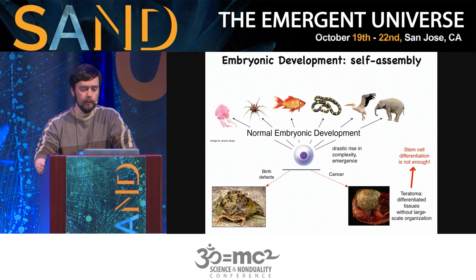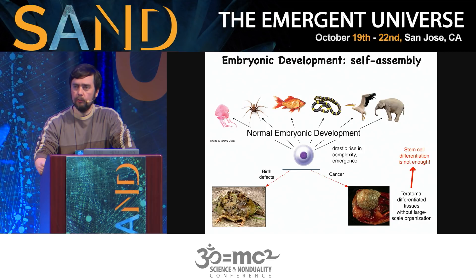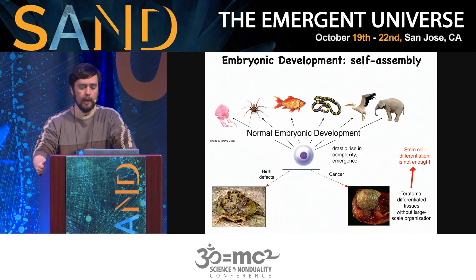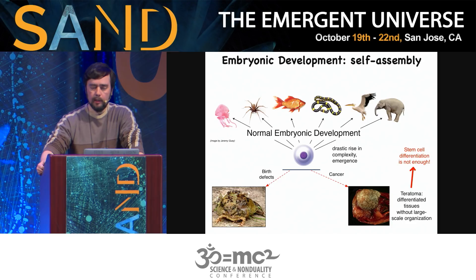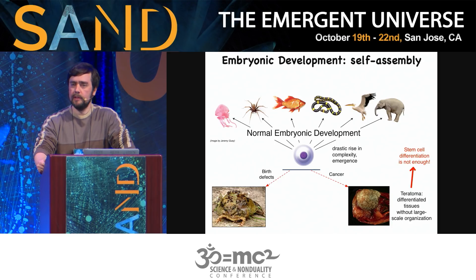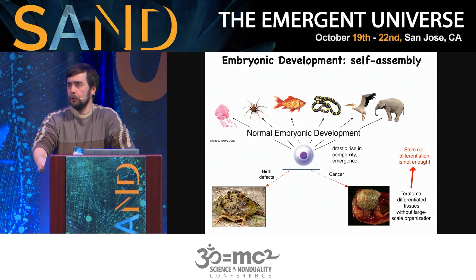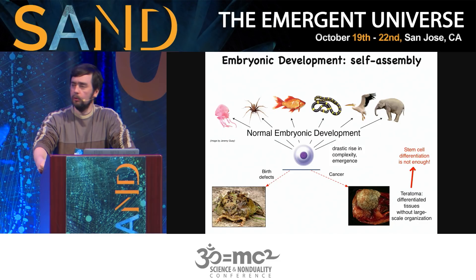Let's talk first about embryonic development. All of you started life as a single cell — the fertilized egg. Remarkably, this process led to the self-assembly of incredibly complex forms. Whether an elephant, an oak tree, or a jellyfish, every egg reliably develops into one of these highly complex anatomies. Note that it's not enough to simply have stem cells that produce the right tissues, because what you see here is a teratoma — a tumor that might have mature tissues: skin, teeth, bone, and muscle.